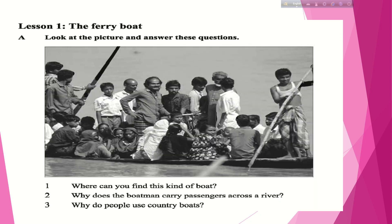At page 45, Lesson 1, 'The Ferry Boat.' Part A: Look at the picture and answer these questions. In the picture we can see a boat on the river with too many people — some standing, some sitting, in a cloudy situation. The questions are: number one, where can you find this kind of boat? Number two, why does the boatman carry passengers across a river? And number three, why do people use country boats? You should practice these orally at home.